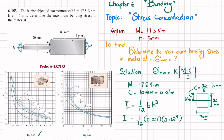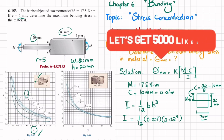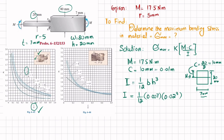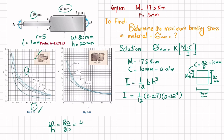Now we will find K. For K, we need the ratios R/H and W/H. W is the maximum height of 80 millimeter, and small H is 20 millimeter. R is given as 5 millimeter. So W/H equals 80 divided by 20, which is 4. And R/H equals 5 divided by 20, which equals 1/4, or 0.25.